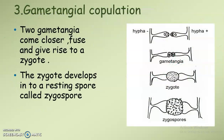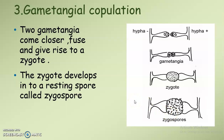Next we can see gametangial copulation where two gametangia — that is positive and negative hyphae, male or female hyphae — come closer and fuse to form a zygote. This zygote develops into a thick-walled resting spore called a zygospore. This is an important feature of Zygomycetes, and one example is Rhizopus.